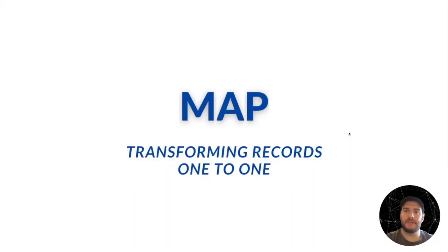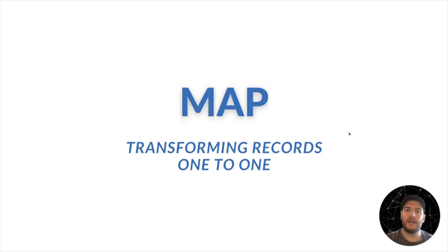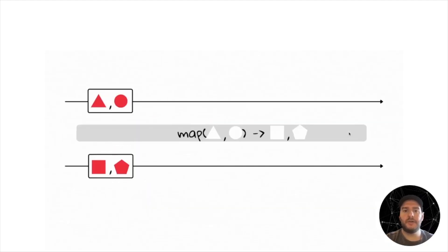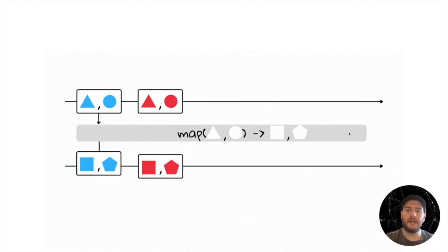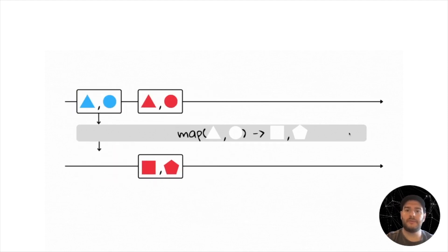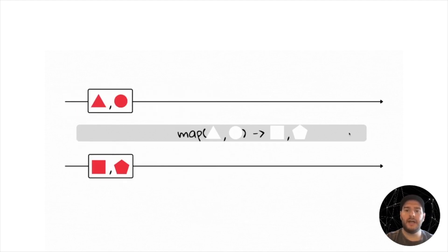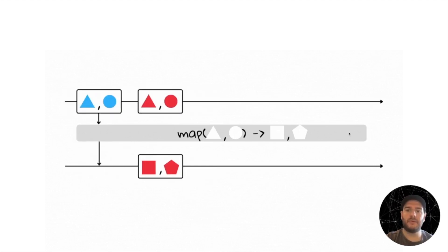Let's start with the map operation. This operation creates a new stream transforming records one to one. And this is how it looks like. As you know, in Kafka every record is composed by a key and a value. The map operation can transform the key and the value. In this case, the map operation is transforming the triangle into a square and the circle into a pentagon.